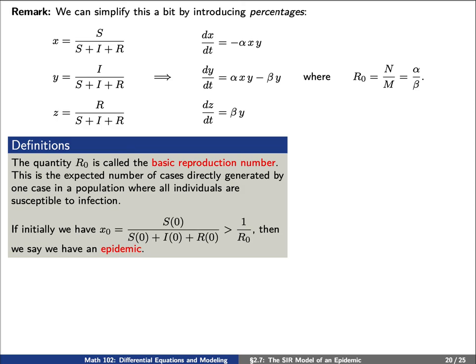There was a Scottish physician named George McDonald who had worked with Ronald Ross to create a robust SIR model of malaria. He wrote a book in 1957 on the subject called Epidemiology and Control of Malaria. McDonald was the first to coin the phrase basic reproduction number, although he used the symbol Z_0 instead of the more current R_0. We'll come back and talk about all of this in much more detail in a future lesson. Thanks for listening.